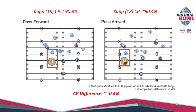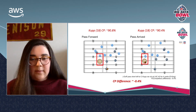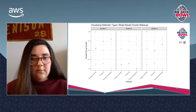Looking at another example: number 18, Cooper Kupp in gold, being covered by Desmond King, number 20 in light blue. At pass forward, he has a 90.8% chance of catching the ball, and at pass arrival he has a 90.4% chance — a difference of negative 0.4%. Just like target probability, aggregating these differences for each defender where they were the closest defender to the target, I came up with closeout and passes defended, which represent how many completions the defender took away in these stages of the pass.